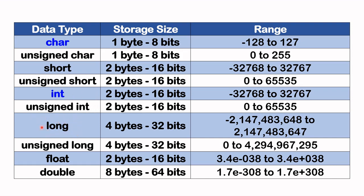Long requires four bytes of storage. Unsigned long is also four bytes. Float is two bytes, and double requires eight bytes of storage space.